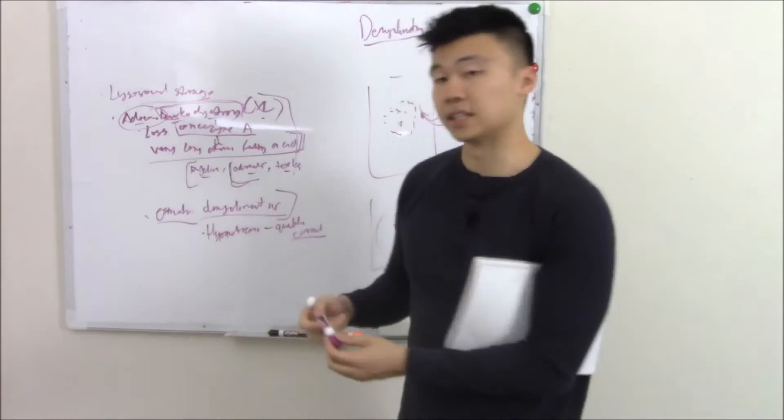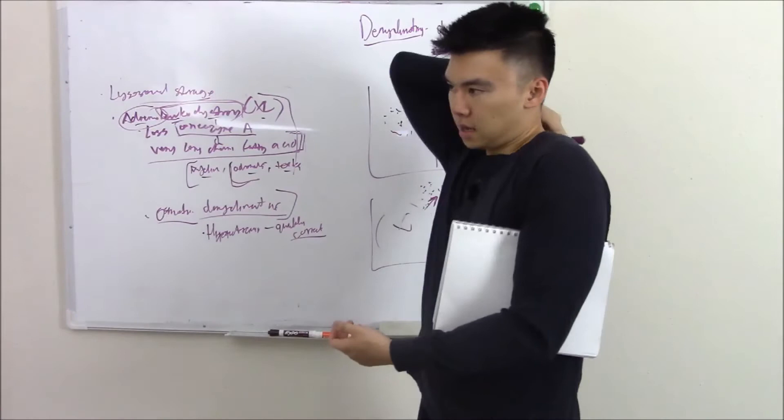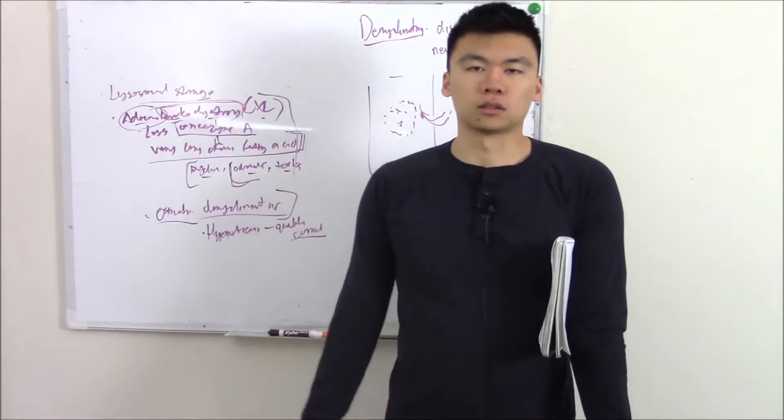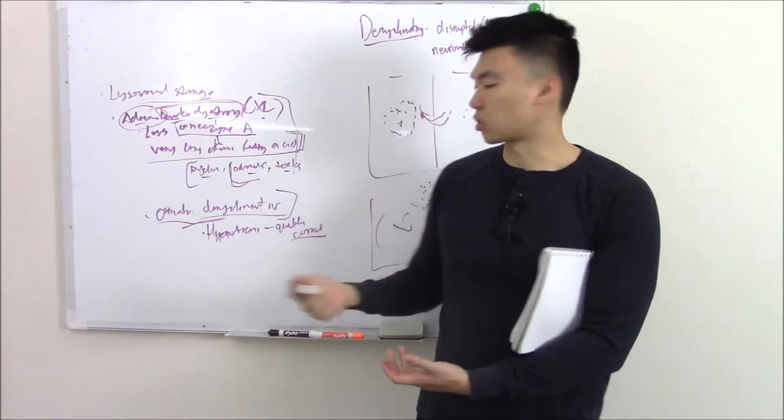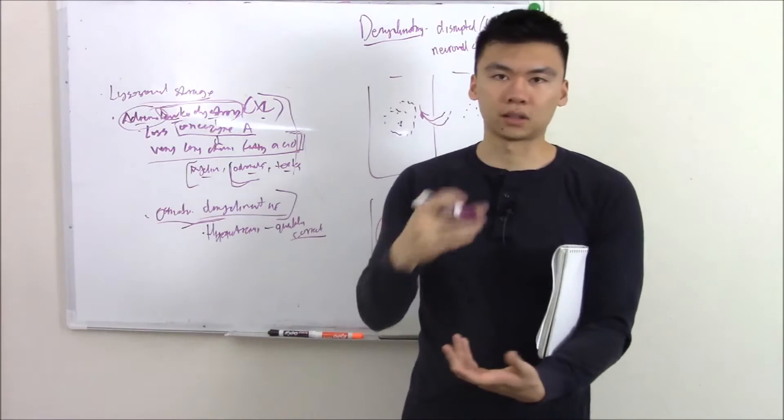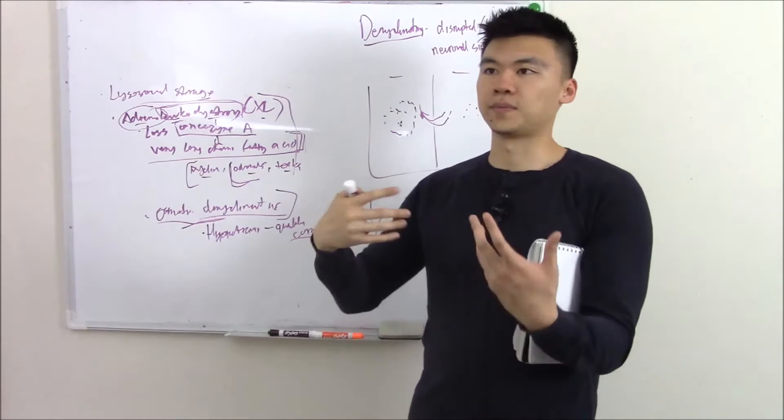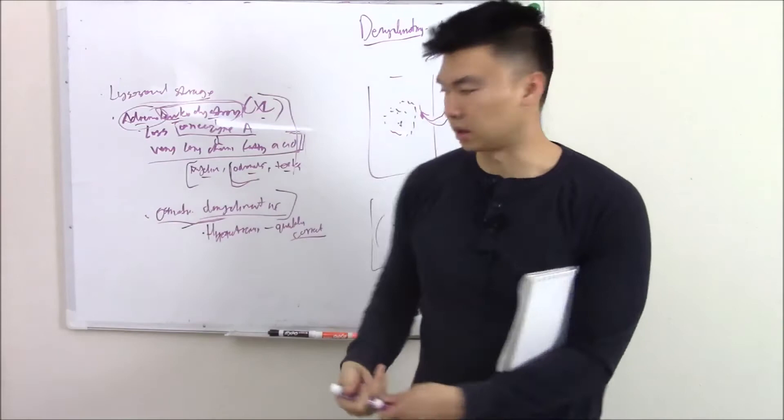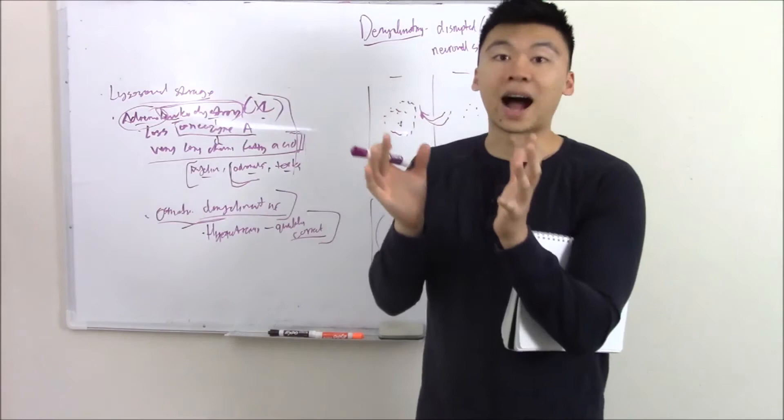That's what causes the demyelination. It likes to affect the pons the most—sometimes we call it central pontine demyelination. The most unfortunate thing is that patients will develop this locked-in syndrome, meaning they can't move their body, they can only move their eyes. Their brain is still functional, but they're locked in their body. Sometimes the question will give you an electrolyte panel—the patient's sodium will be like 120, so they're hyponatremic. They came into the hospital and was treated and suddenly developed loss of sensation, locked-in syndrome. What happened? They corrected it too quickly.